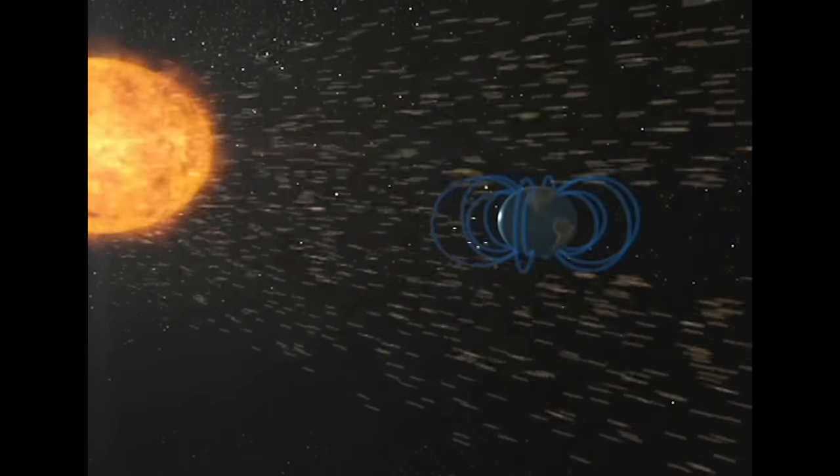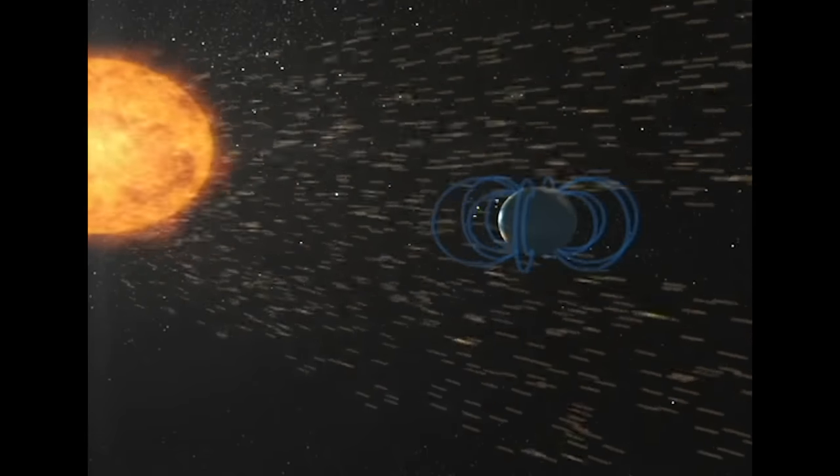If our planet was smaller, its magnetic field would be weaker, allowing the solar wind to strip away our atmosphere, slowly transforming the Earth into a dead, barren world much like Mars.